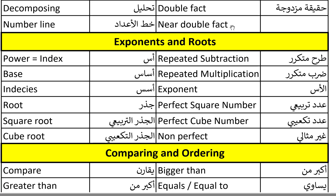Exponents and roots. The first word: power. Power. And power equals index. Index. Base. Base. Indices. Indices. The plural of the word 'index' is 'indices.' Root. Root. Square root. Square root. Cube root. Cube root.